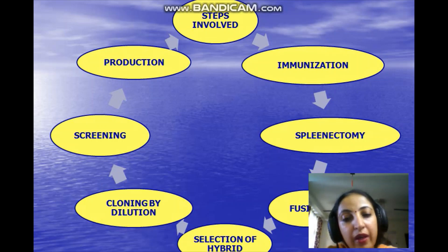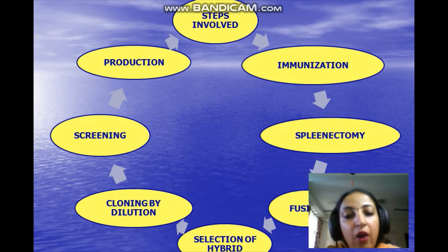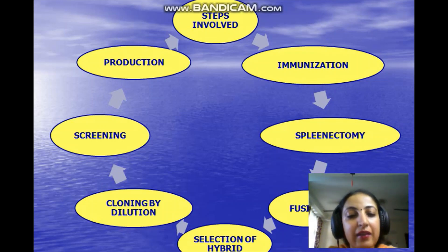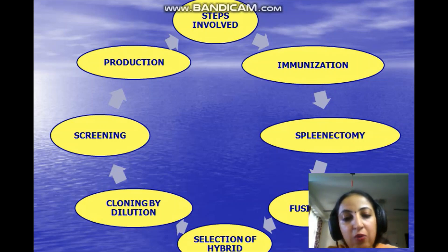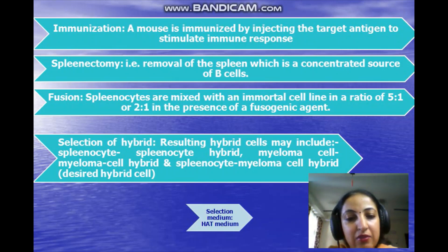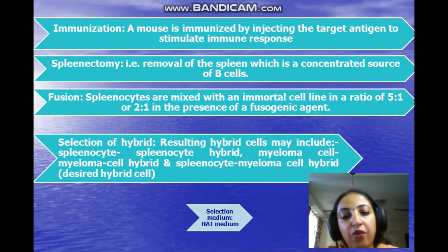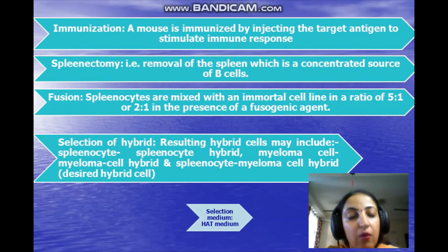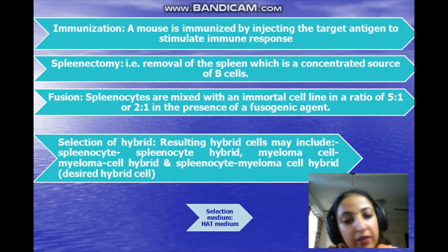The particular hybrid we require is B cell with myeloma cell; the other hybrids are to be rejected. This is possible by selecting the hybrid using a medium called HAT medium. HAT stands for hypoxanthine, aminopterin, and thymidine medium. This medium was discovered by a scientist named Littlefield, who added these three major constituents.